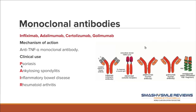These drugs are used to treat what I call PAIR diseases: Psoriasis, Ankylosing spondylitis, Inflammatory bowel disease such as Crohn's disease, and Rheumatoid arthritis. They all share the same pathology — it's all about inflammation. If you can decrease inflammation in a patient's body, they have less pain and feel better. On the board exam, remember PAIR as the mnemonic for diseases treated with these monoclonal antibodies.